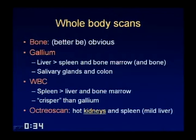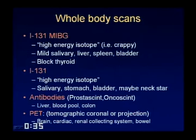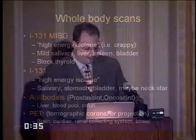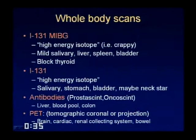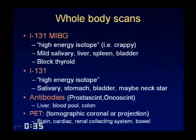That leaves two more: the high-energy scans. If you see a crappy scan, you say it appears to be a high-energy isotope, meaning I-131. There are two I-131 scans. One is pure I-131 for thyroid cancer staging — patients may have had thyroidectomy, you may see residual neck activity with star artifact, plus salivary activity, stomach, and bladder. MIBG I-131: generally the thyroid is blocked with Lugol solution, you still have some mild salivary activity with faint liver, and possibly the spleen and bladder. The last category is an antibody scan — antibodies hang out in the blood pool for days and get chewed up in the liver, so you see blood pool, liver, and colon activity.